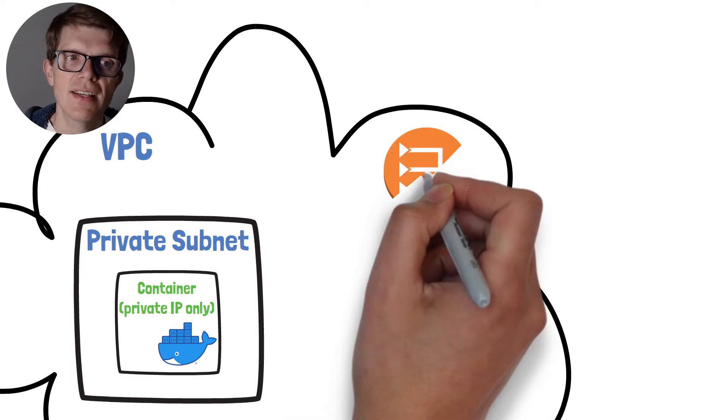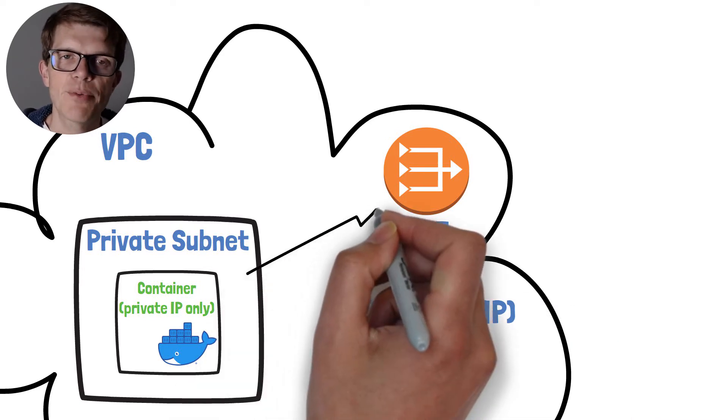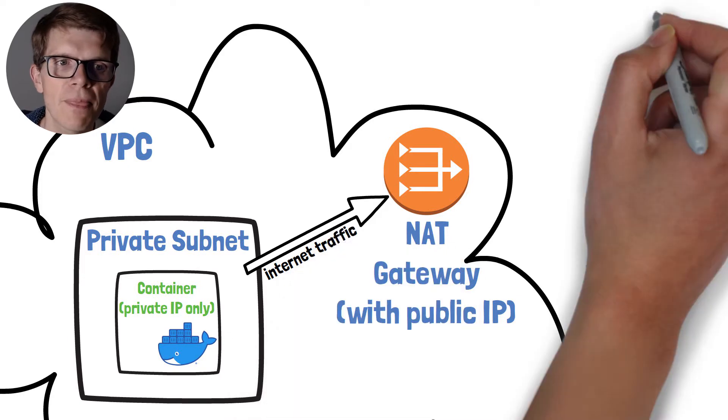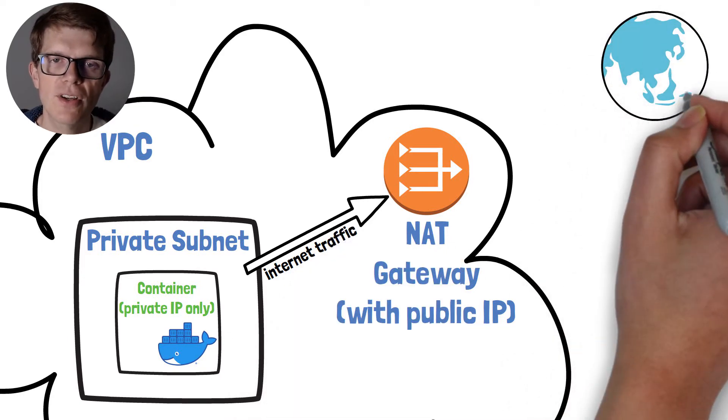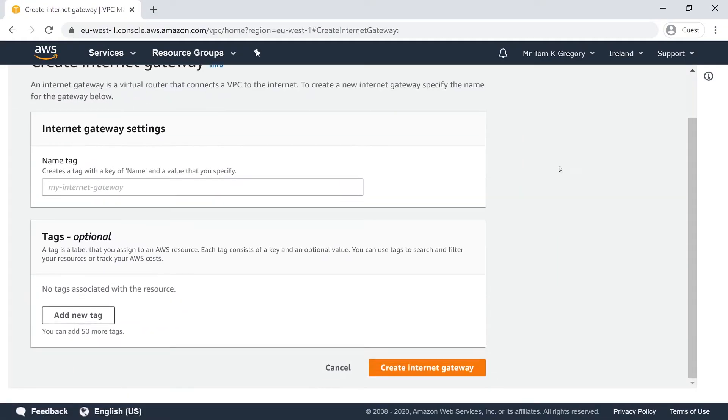A NAT gateway is kind of like the internet gateway for private subnets. It's always assigned a fixed public IP address. If you've got a container in a private subnet, all traffic is routed through the NAT gateway, which translates the private IP of your container to a public IP required for internet access — hence its name, NAT gateway, which stands for Network Address Translator. NAT and internet gateways are horizontally scaled and highly available AWS resources, so you don't need to think about them once you provision them.